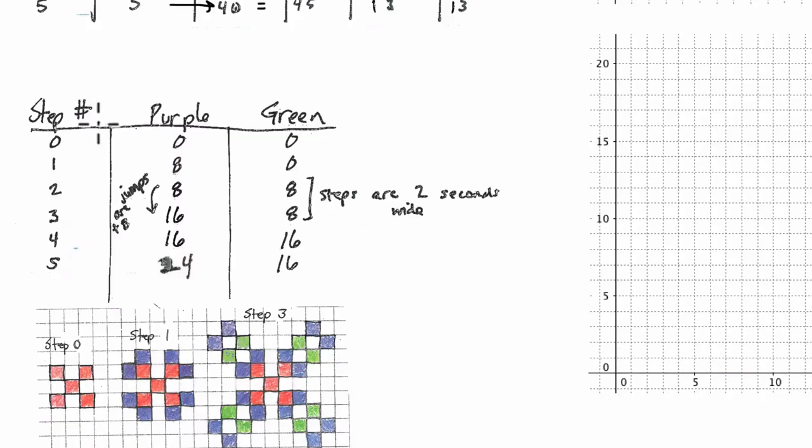So let's graph the purple. So at step zero, purple's at zero, alright so I'll put a dot here, and then that happens until one second. At one second, purple jumps to eight, but it's at zero until one step, or one second. I put an open circle there, so at the first step, where we go all the way up to eight here.